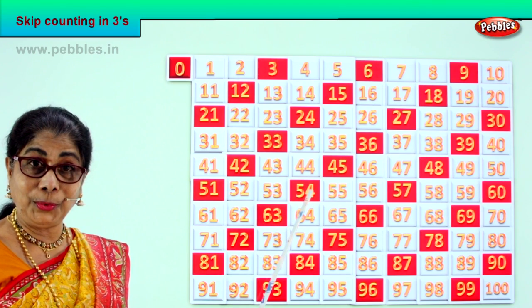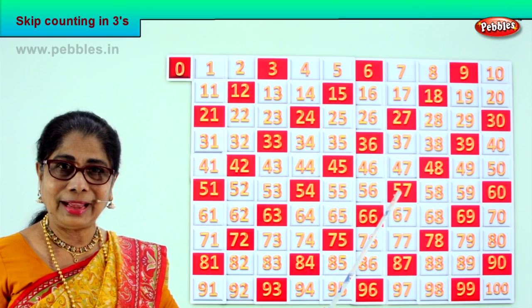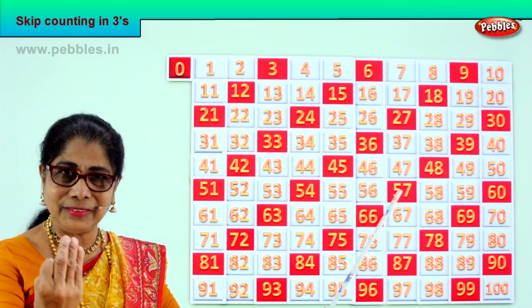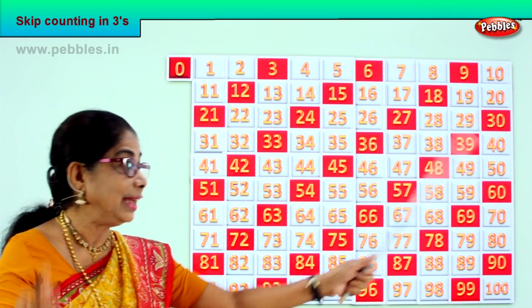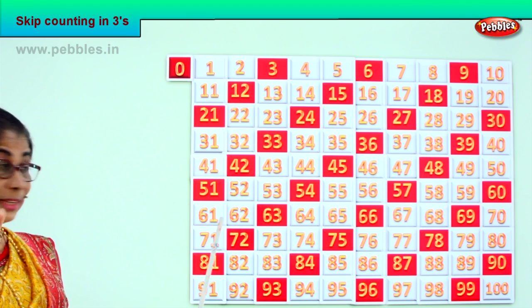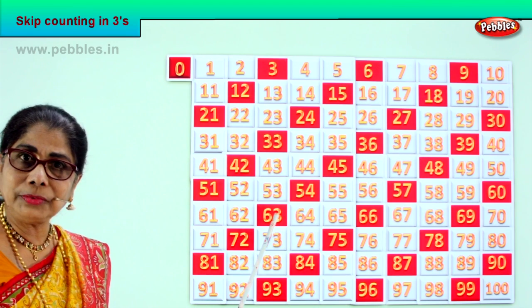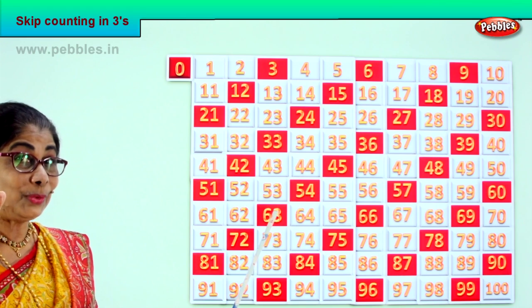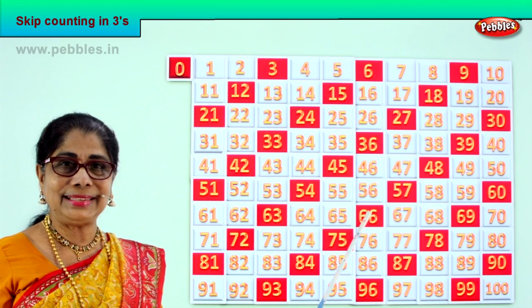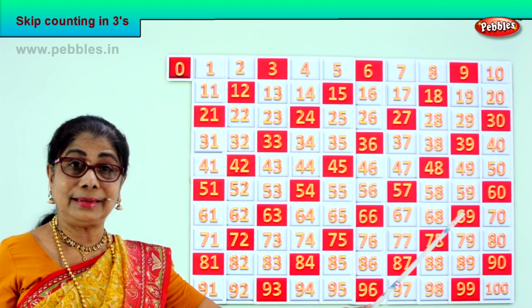After 54 — 55, 56, 57. After 57 — 58, 59, 60. After 60 — 61, 62, 63. After 63 — 64, 65, 66. After 66 — 67, 68, 69.